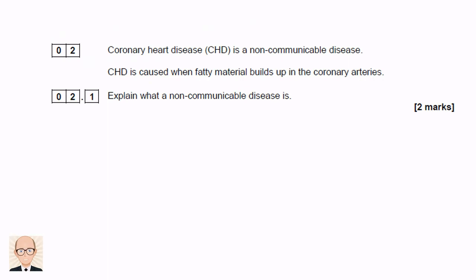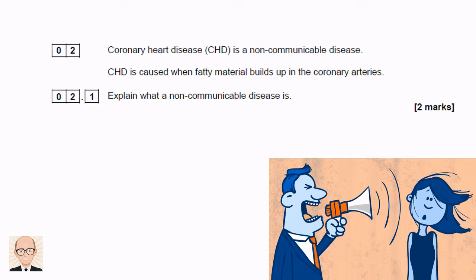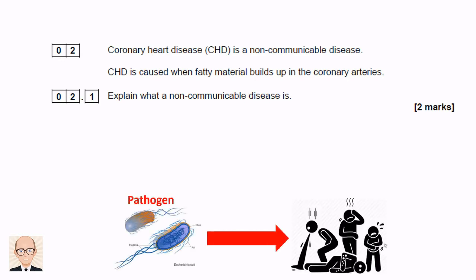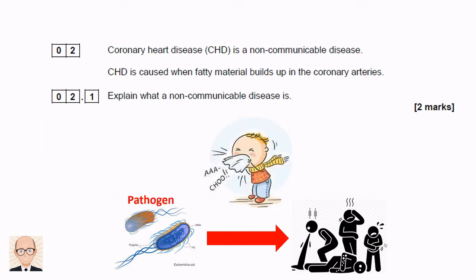Question 1 introduces coronary heart disease as a non-communicable disease and asks us to explain what a non-communicable disease is. The word communicable means able to be communicated or transferred from person to person. A communicable disease is one that can be caught from other people. It must therefore be caused by a pathogen such as a bacterium or virus, which is passed from one person to another either through the air or via direct contact with contaminated surfaces or body fluids. People with these diseases are called infectious or contagious since they can infect other susceptible people.